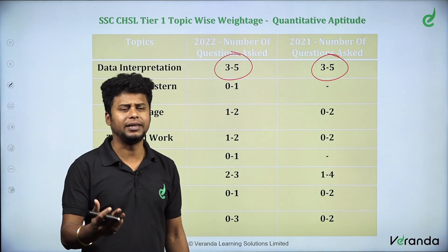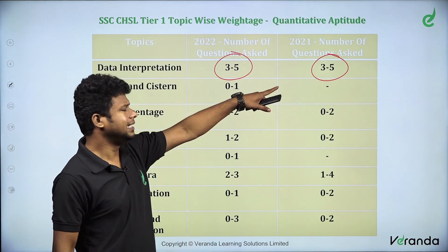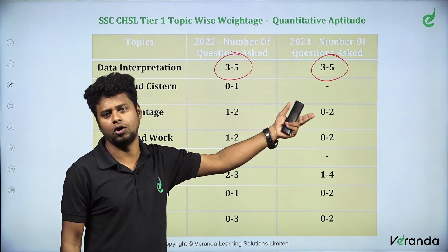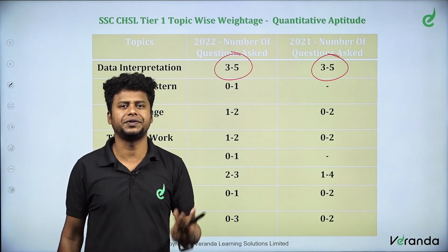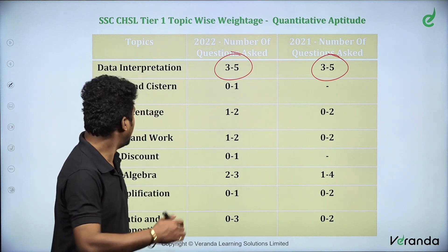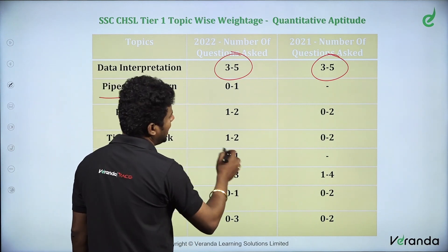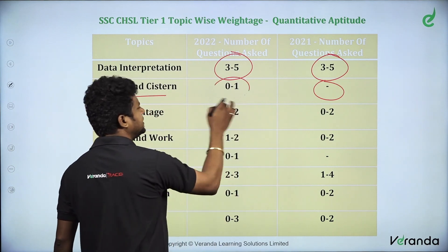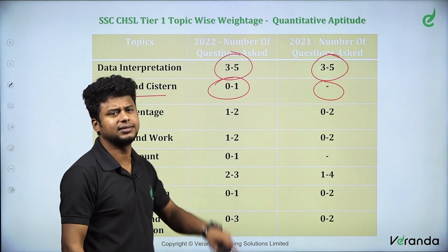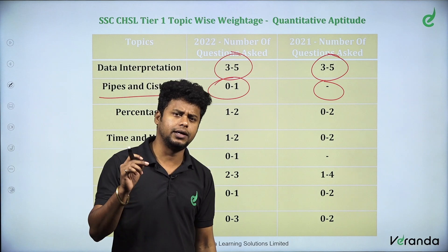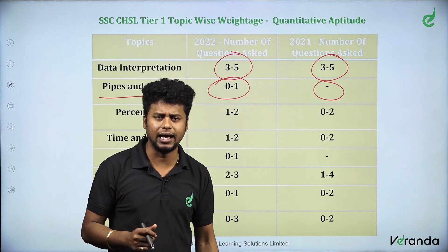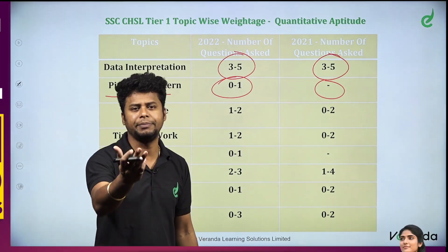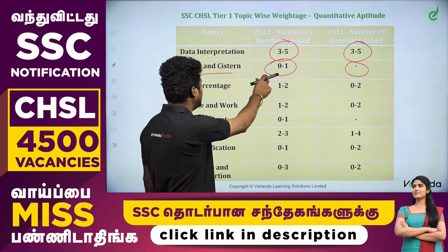There were around 2 questions, and we will also see WIP predictions based on previous question papers. The next topic is Pipes and Cisterns. If you know the concept, you can answer and solve those questions. Pipes and Cisterns — you can solve them, and there are not many questions on this topic.